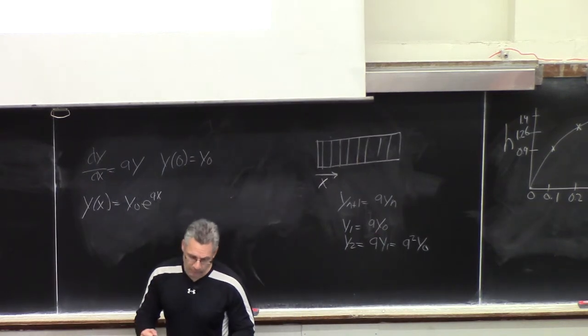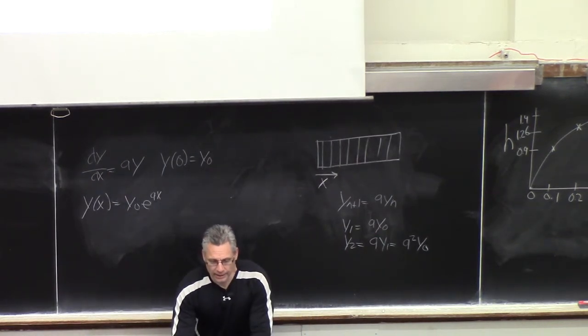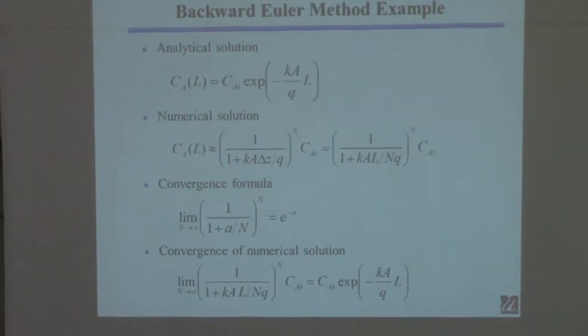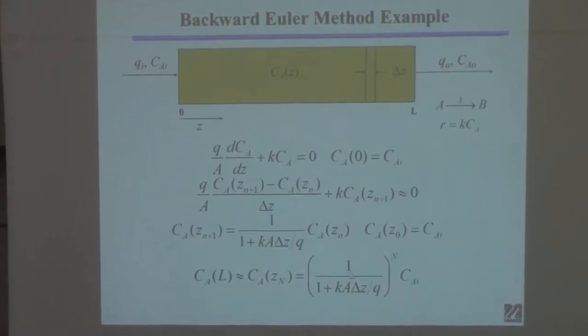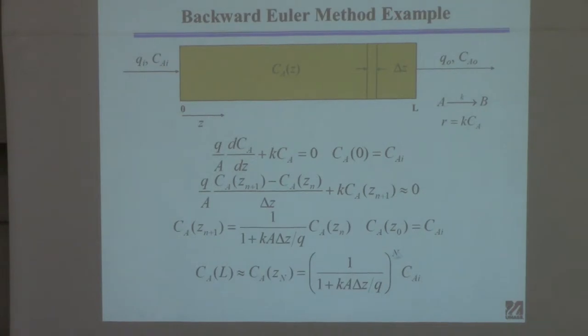Okay. So we're almost to the payoff point, people. All right. So this was the numerical solution. So, okay, there's my, here's my goal. There's the analytical solution. Right? There's the numerical solution. I want to prove that if n is sufficiently large, they converge to each other. Okay? That's my goal. All right. So let's see how we do that.